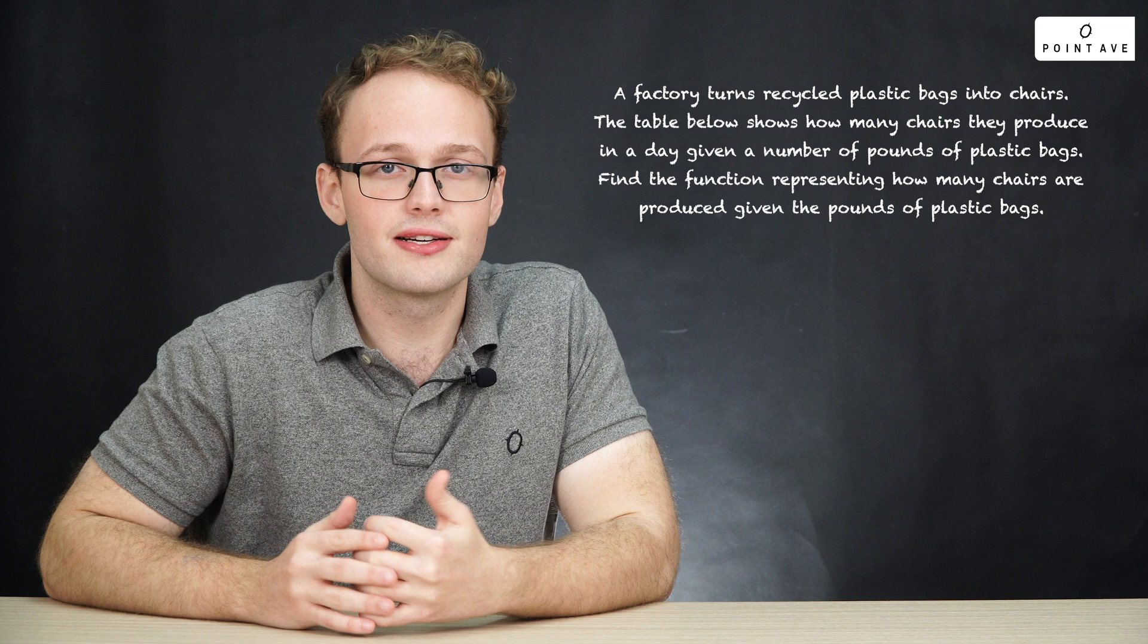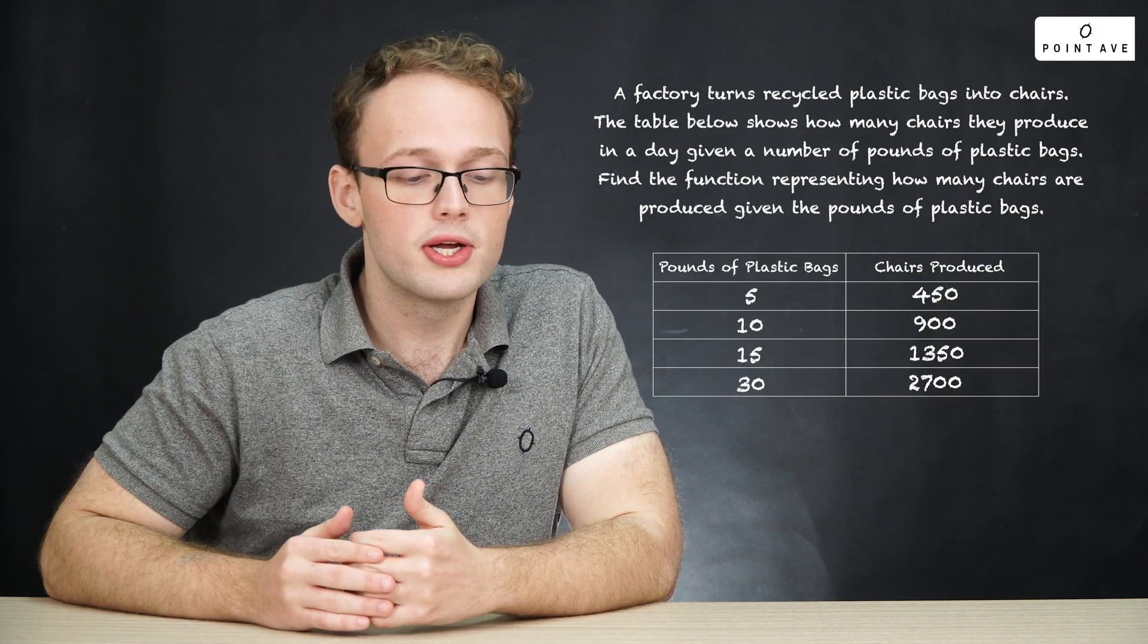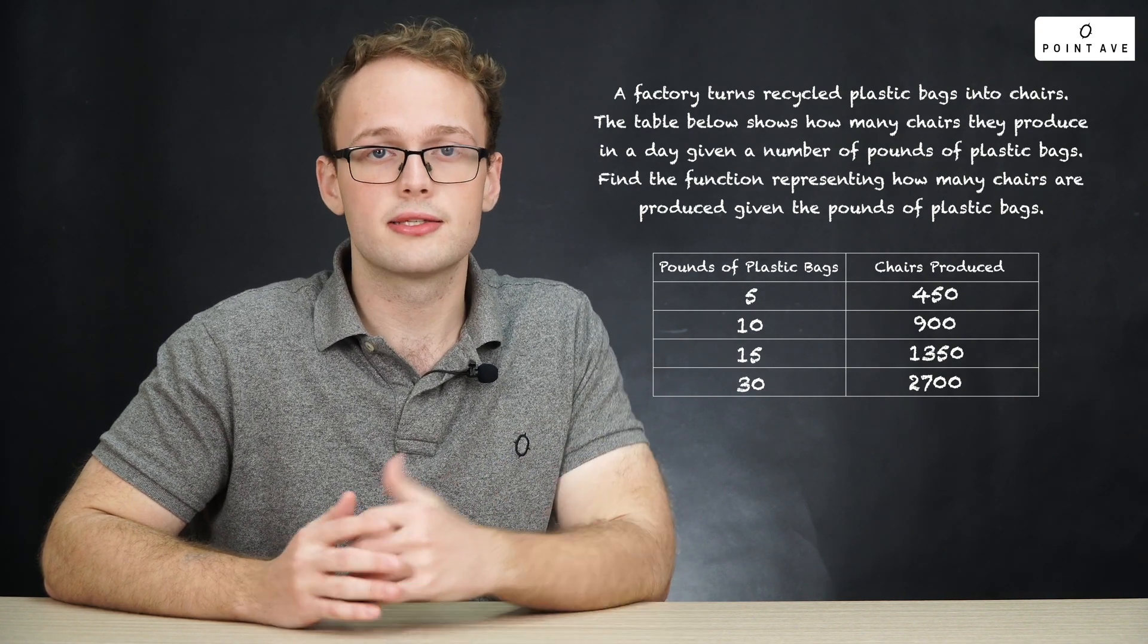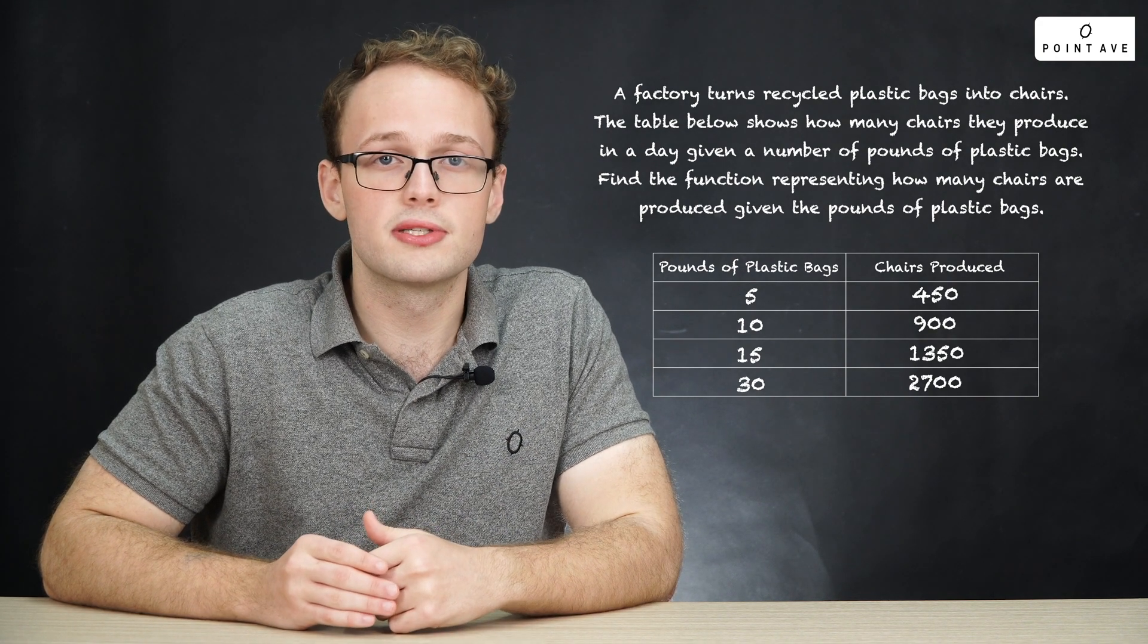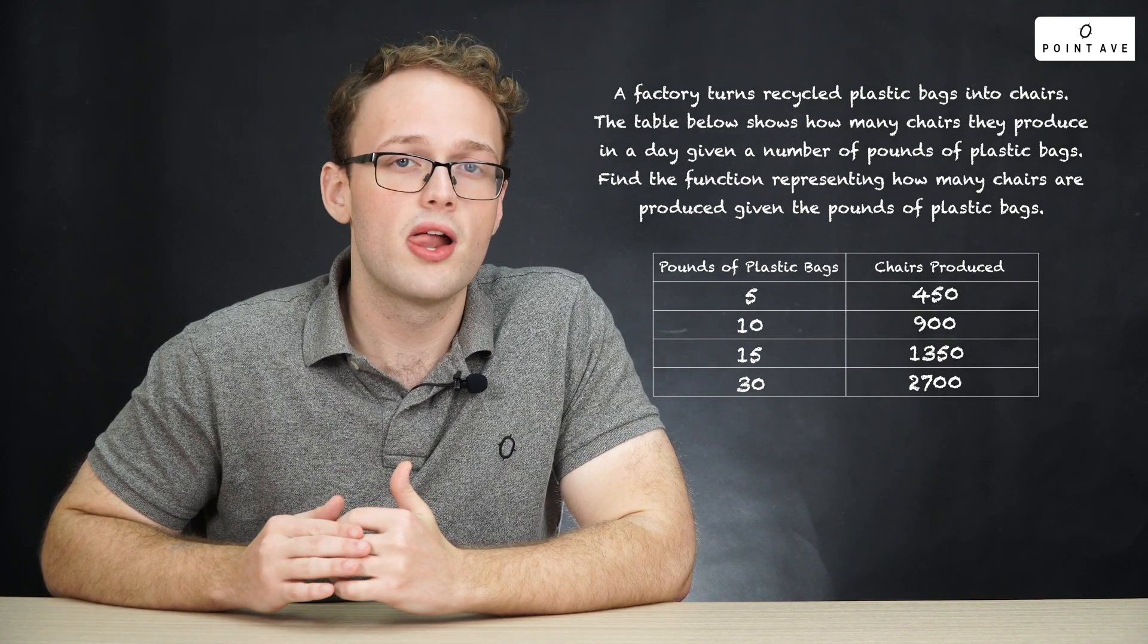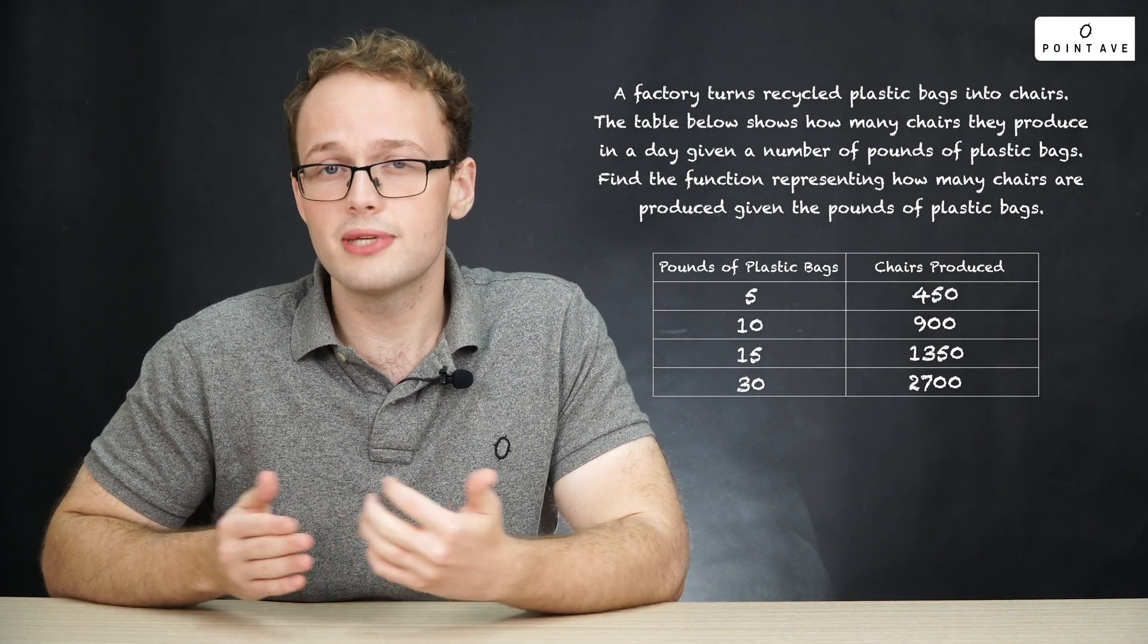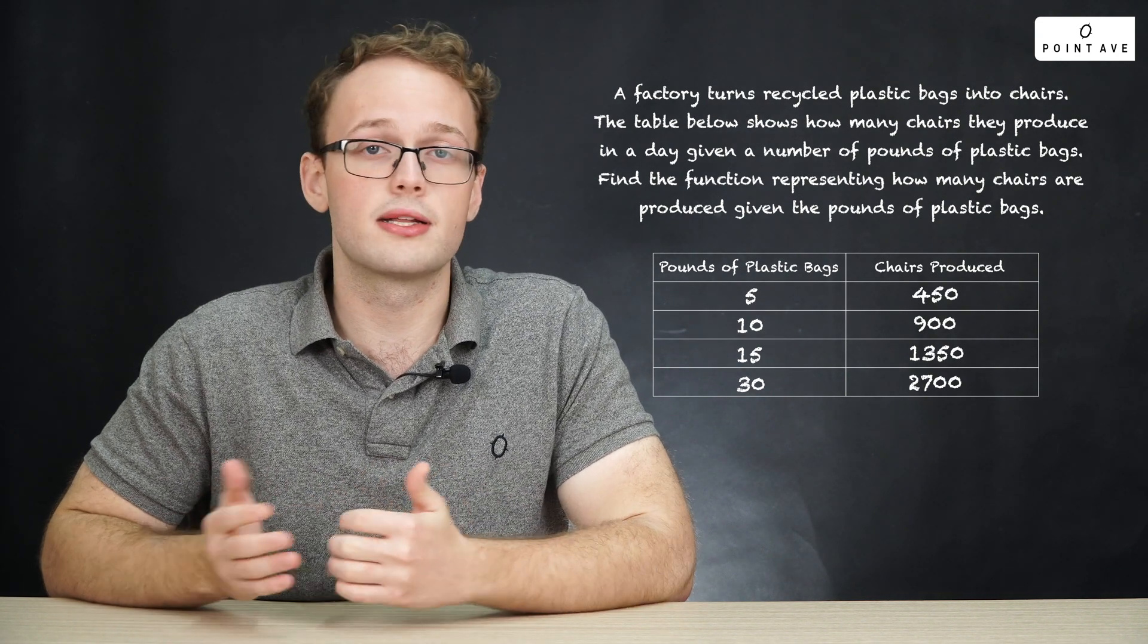Suppose we were given a very similar problem but presented differently. The problem reads, a factory turns plastic bags into recycled chairs. The table below shows how many chairs are produced given a number of pounds of plastic bags. Find a function representing how many chairs are produced given a number of pounds of plastic bags. So given that we're working with linear functions now, it's easy to expect that we will have a linear function describing the data. However, sometimes we might have to debate between things like quadratic or exponential or anything else. Let us now find this linear function.